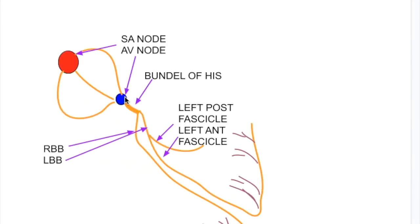So where is the bundle? Arising from the AV node is the bundle of His. Bundle of His divides into a right bundle branch and a left bundle branch. The left bundle branch divides into a left anterior fascicle and a left posterior fascicle, and arising from these fascicles is the Purkinje tissue.